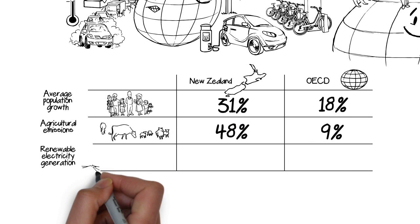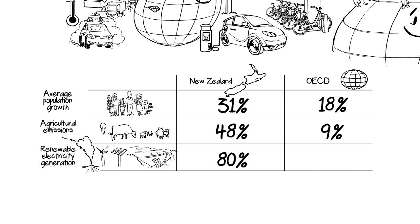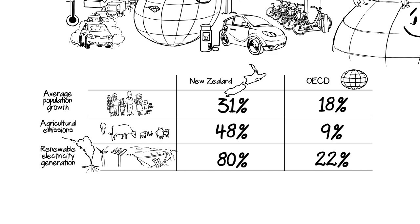We have one of the highest levels of renewable electricity generation in the world, leaving less room to reduce emissions in this area. These factors mean it is generally more difficult and expensive for us to reduce our domestic emissions compared with many other developed countries.